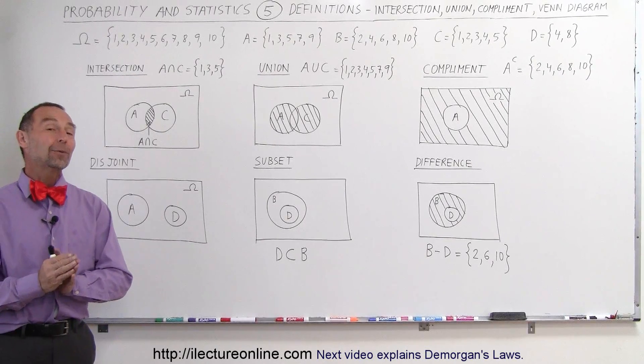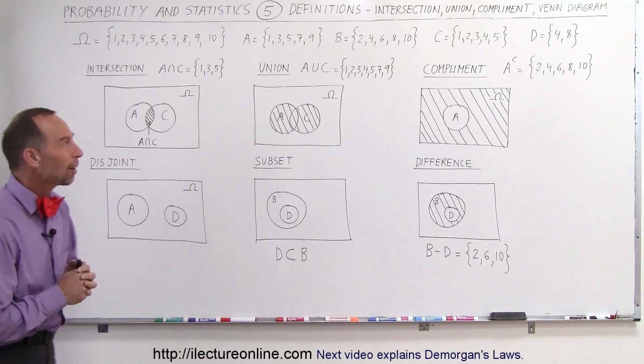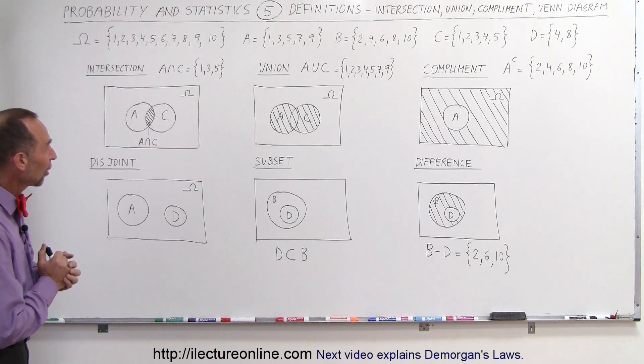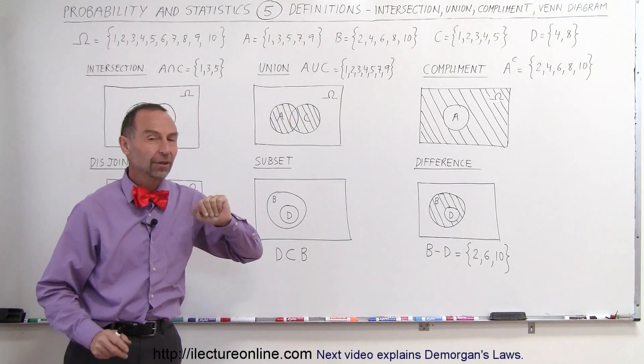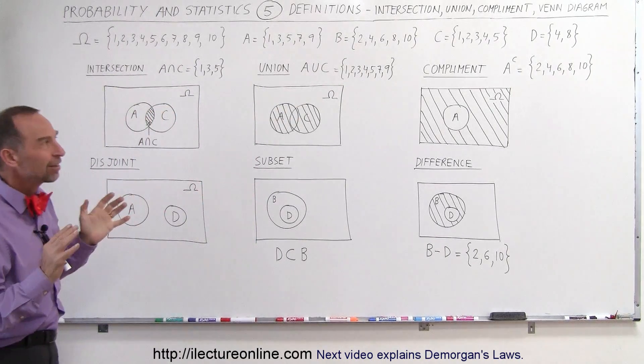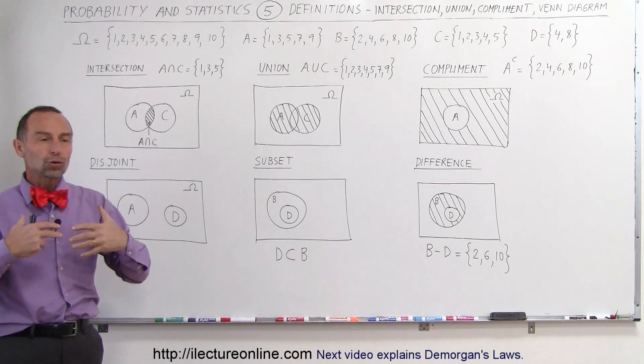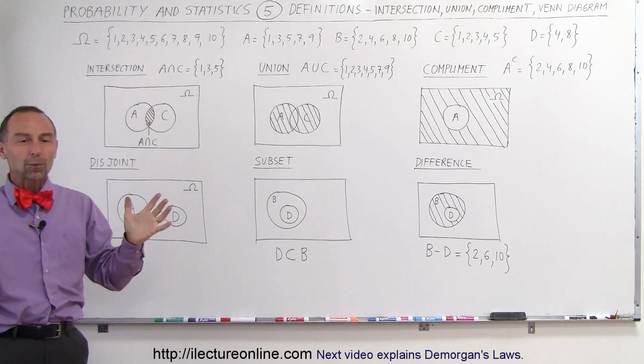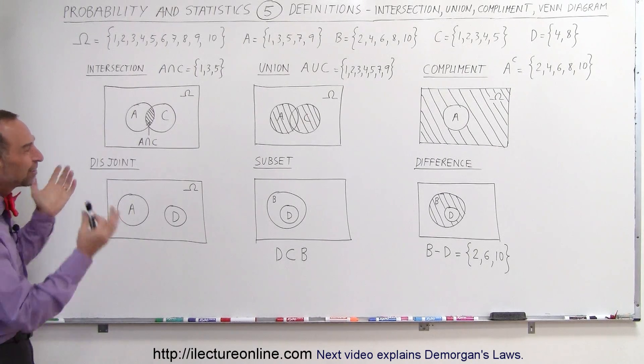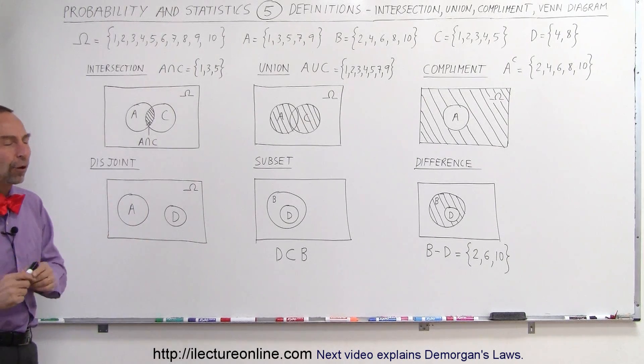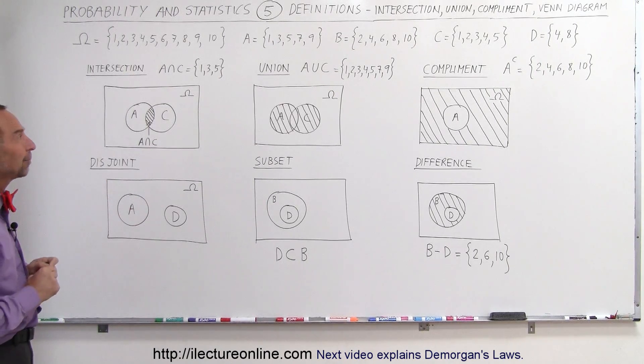Welcome to Lecture Online. Now we're going to define some very important terms in statistics and probability: intersection, union, and complement. They're all part of what we call Venn diagrams, which are used to illustrate graphically what sets and sample spaces are, making it easier to comprehend.